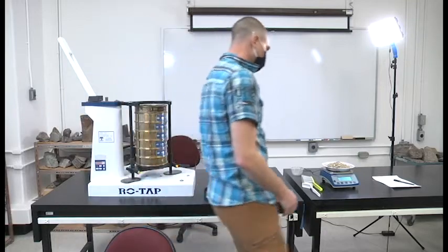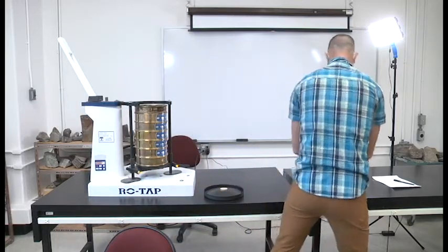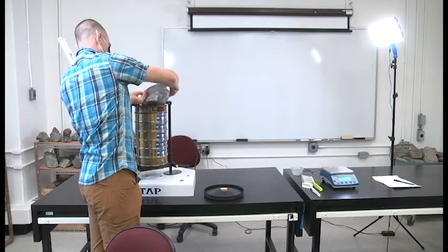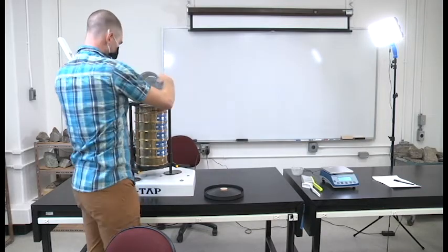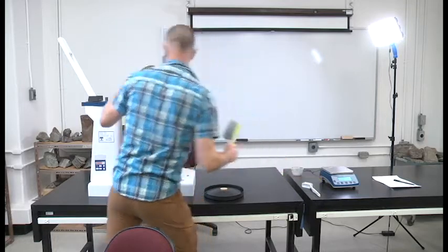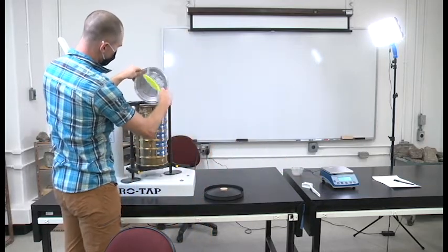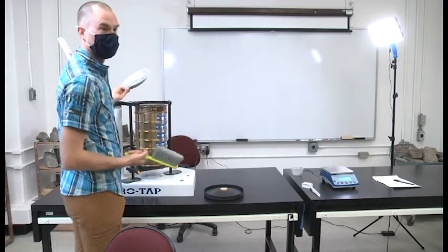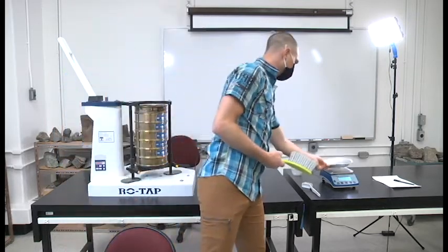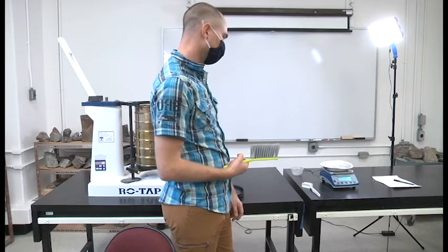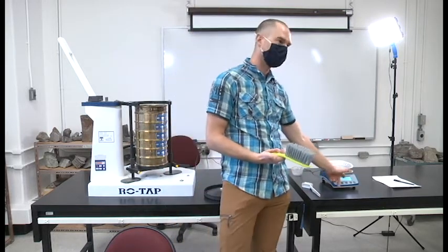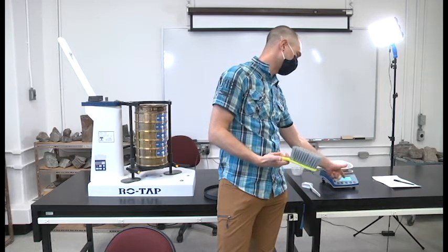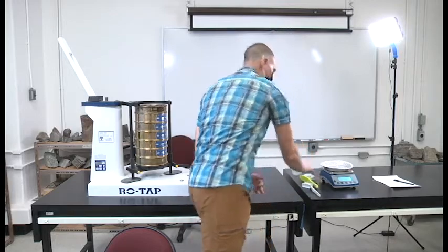My next step will be to take my sample and I'm going to be really careful not to lose any material. I'm going to pour it into the sieve stack. I'm going to be extra careful because I don't want to spill any particles. I'll check back on the scale, and because I zeroed it at the start of the test, this actually gives me good confidence that I got all the material into the sieve stack because I didn't spill any.